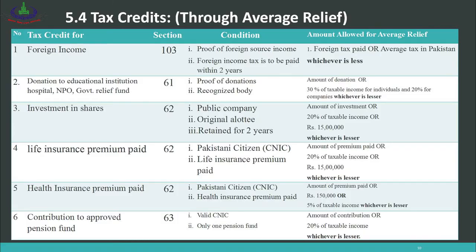Tax Credits: Tax credits are another method through which a person's tax can be reduced. After calculating gross tax and applying any applicable tax rebates, tax credits are calculated next. There are six types of tax credits allowed to individuals under the law. The first is foreign income tax credit under Section 103 — the condition is that you must provide proof of foreign income and must have paid foreign income tax in the last two years. The relief is the lesser of foreign tax paid or the average tax rate in Pakistan applied to the foreign income.